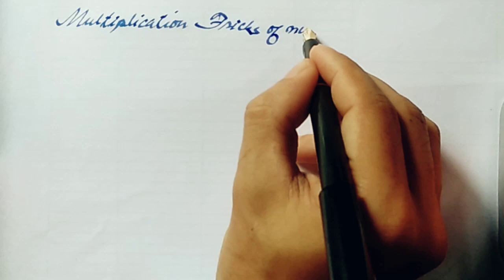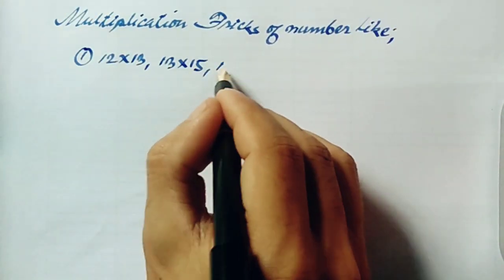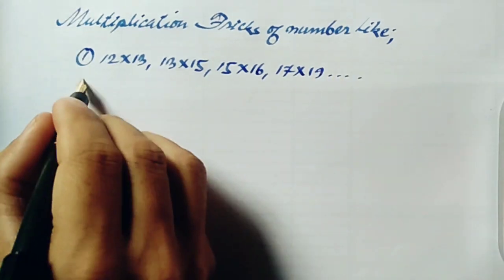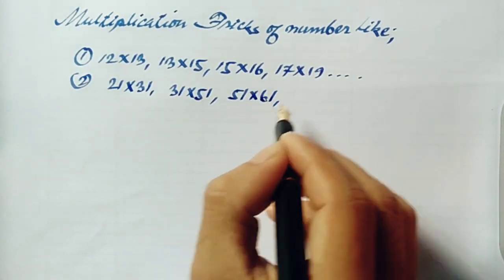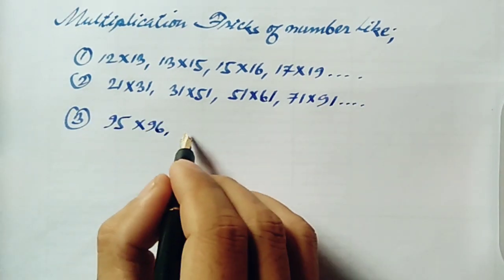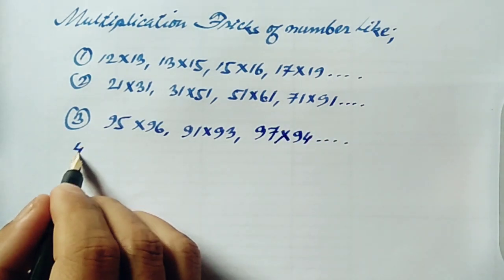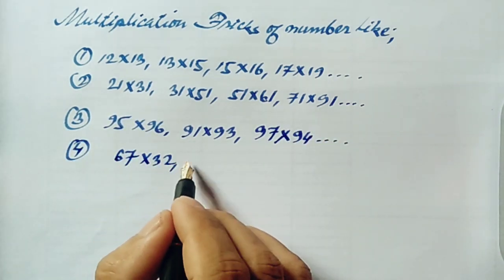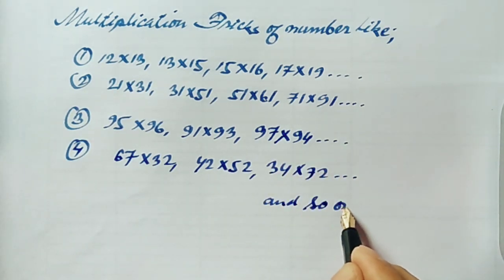Now let us come to the multiplication tricks of numbers like 12 into 13, 13 into 15, 15 into 16. In the second case, like 21 into 31, 31 into 51, 51 into 61, 71 into 91. In the third case, 95 into 96, 91 into 93, 97 into 94. And in the last part, like 67 into 32, 42 into 52, 34 into 72, and so on.